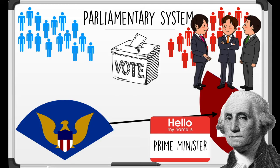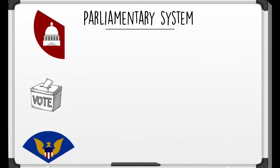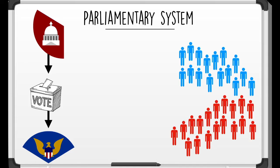But here's the major difference — people that live within this parliamentary system cannot vote for the executive leader. In a parliamentary system, the legislative branch is responsible for voting for the executive leader. It's not actually up to the people to vote for the prime minister or the president.